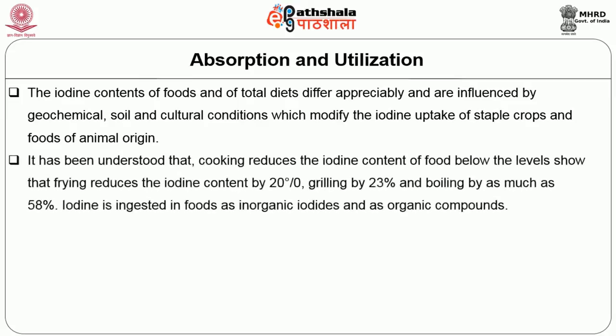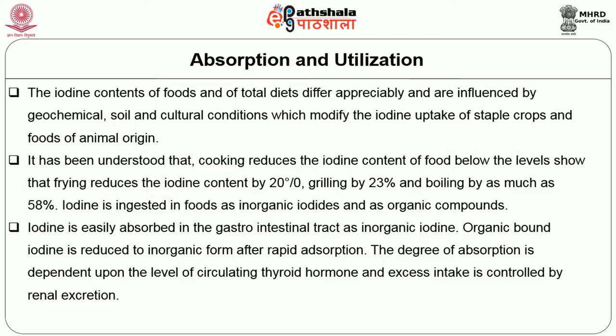It has been understood that cooking reduces the iodine content of food: frying reduces the iodine content by 20%, grilling by 23%, and boiling by as much as 58%. Iodine is ingested in foods as inorganic iodides and as organic compounds. Iodine is easily absorbed in the gastrointestinal tract as inorganic iodine. Organic bond iodine is reduced to inorganic form after rapid absorption. The degree of absorption depends upon the level of circulating thyroid hormone, and excess intake is controlled by renal excretion.